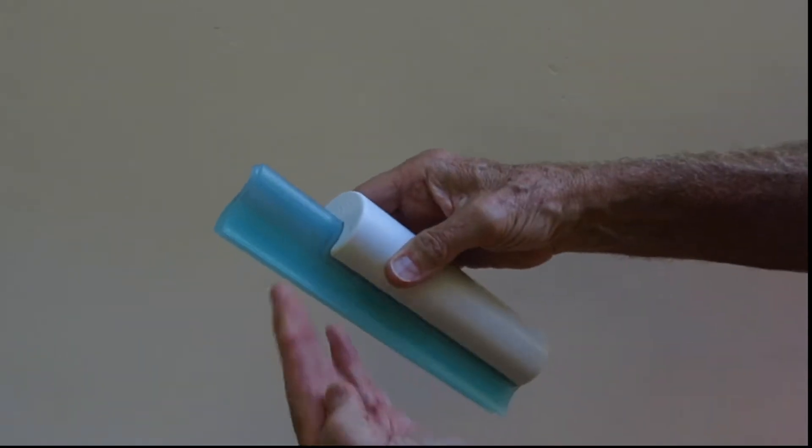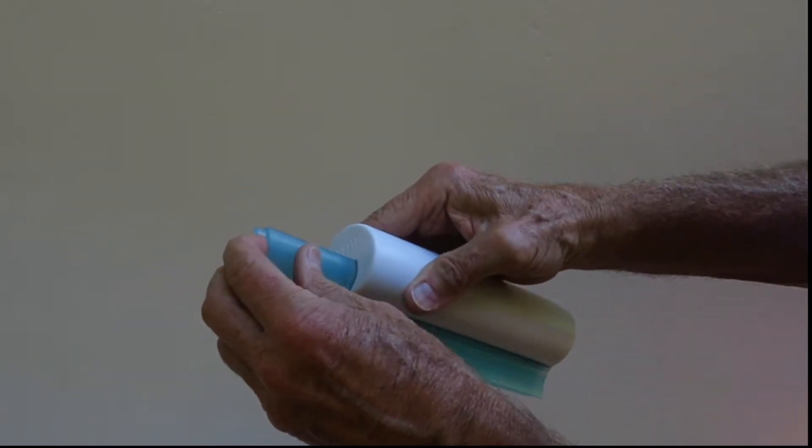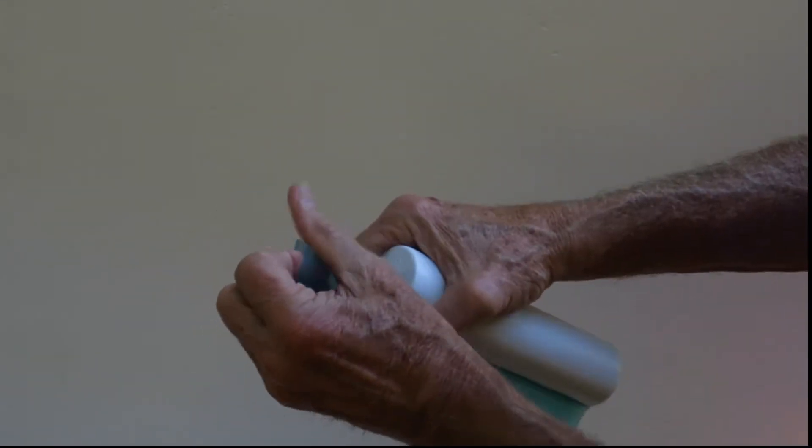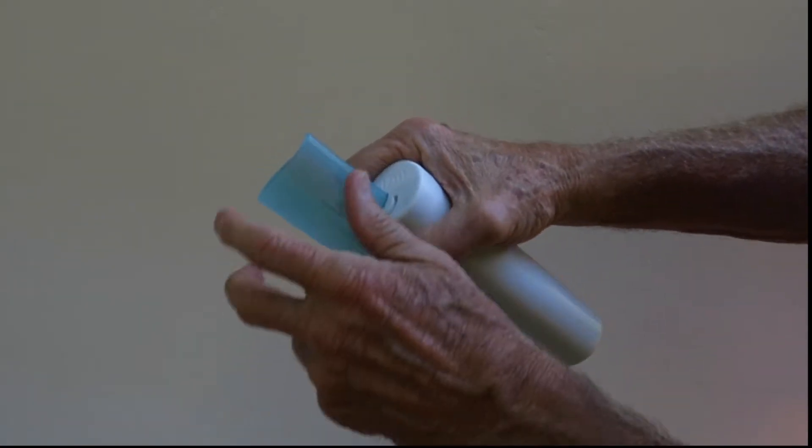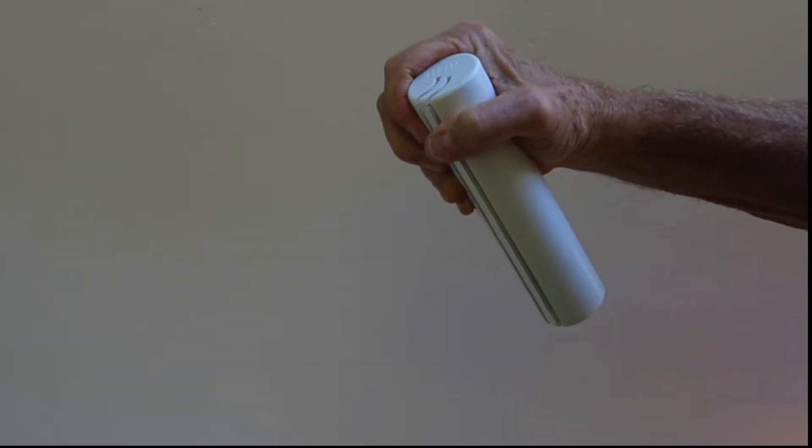To remove the blade, grip the blade at the top and pull it away from the handle like this. To get the second blade out, simply repeat the process. Pull it away from the handle.